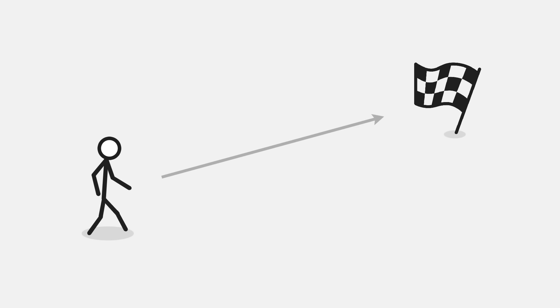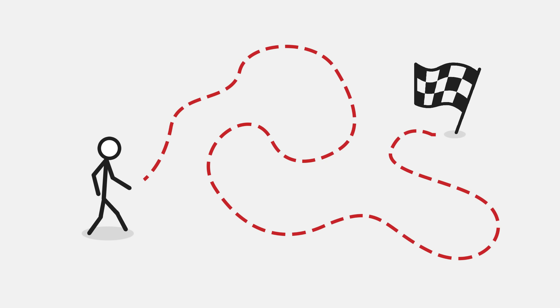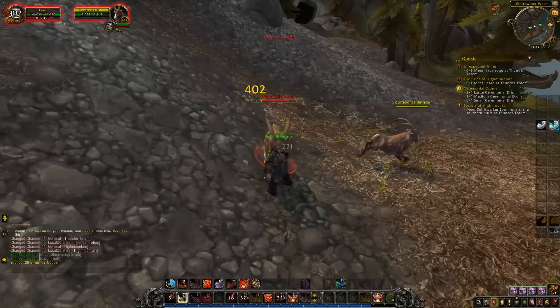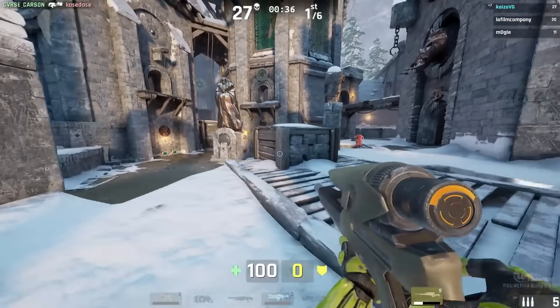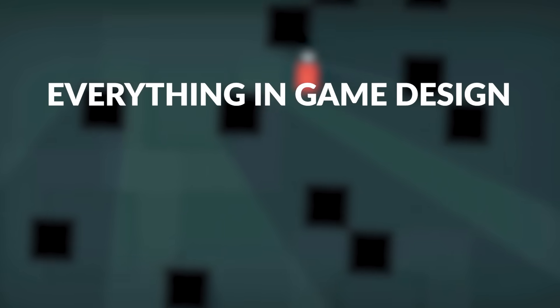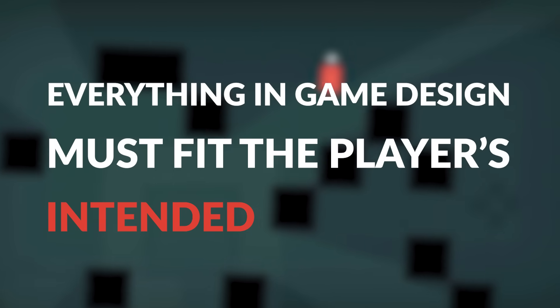So often when making a game, you start by setting a goal that the player has to achieve. But how to get the player from the beginning of the game towards that goal, and most importantly, how to get the player to enjoy this journey, is where the tricky and also fun part comes into play. When it comes to game design, it's very hard to define rules and guidelines that apply to all games, simply because games are so different. Design choices that work for a MMORPG might not work at all for a competitive FPS. And now comes a very important point: everything in game design must fit the player's intended experience.